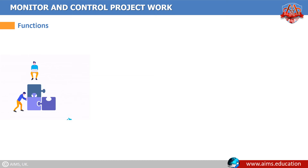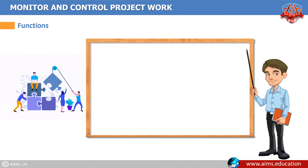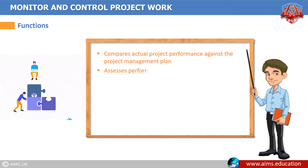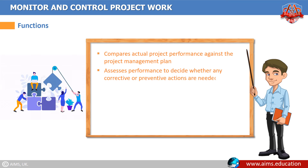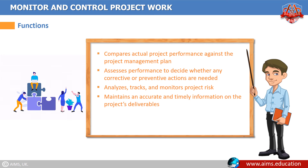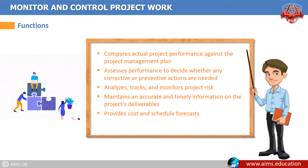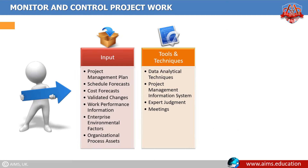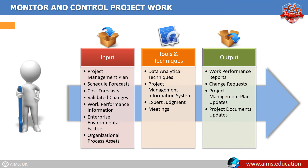Functions of the monitor and control project work process: it compares actual project performance against the project management plan; assesses performance to decide if any corrective or preventive actions are needed; analyzes, tracks, and monitors project risk; maintains accurate and timely information on the project's deliverables; provides cost and schedule forecasts; and monitors the implementation of approved changes. Here are the inputs, tools and techniques, and outputs of the monitor and control project work process.